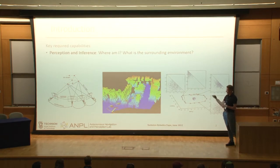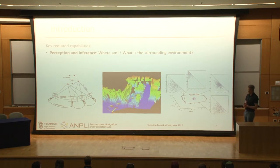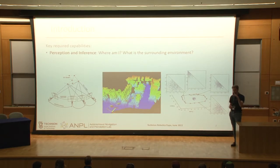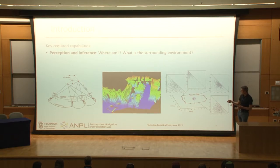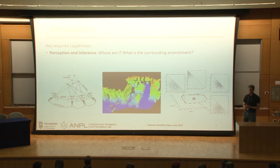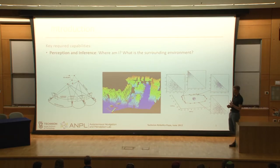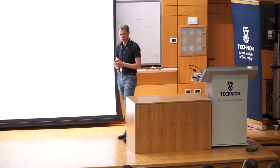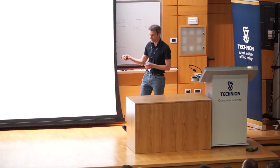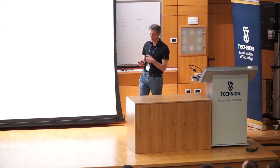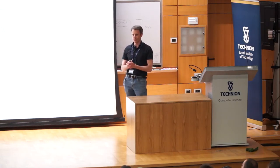We can also ask these questions at the semantic level — a higher-level understanding of the environment. For example, what is inside this box: is that a chair, a car, an elephant? This calls for classification approaches, and you can imagine an object viewed from different viewpoints along the agent's track can be seen very differently visually.